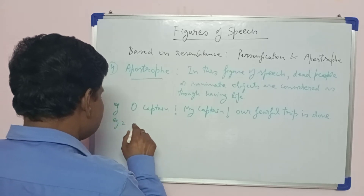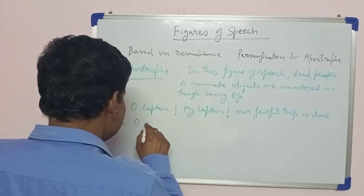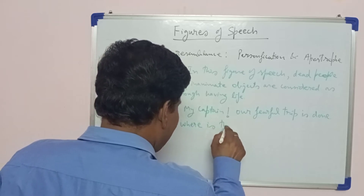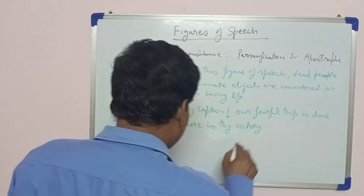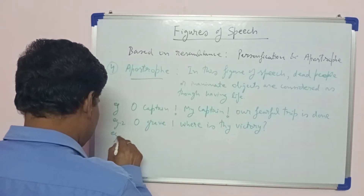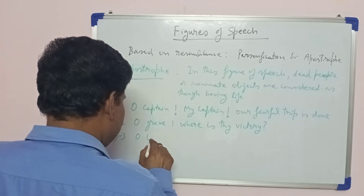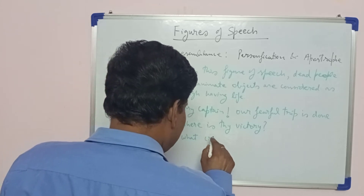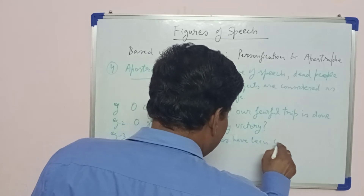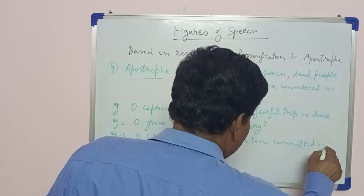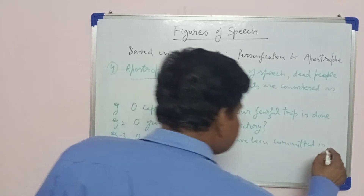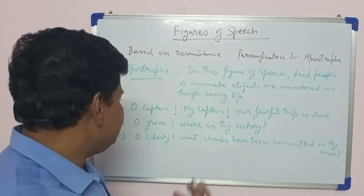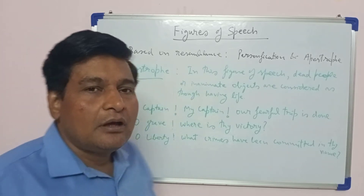Another example: 'Oh grave, where is thy victory?' And: 'Oh liberty, what crimes have been committed in thy name?' These are examples of apostrophe, where grave and liberty are addressed as though having life.